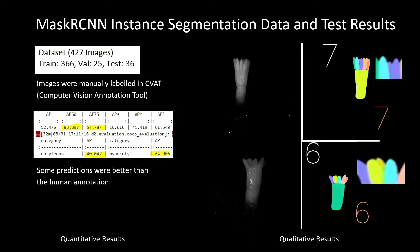For the Mask RCNN, we used a dataset of 427 images which were manually annotated in CVAT, and then we trained the instance segmentation model. The quantitative results were not too bad — it struggled with the small cotyledons, but the qualitative results were really promising. The number shown is actual versus predicted: 7 and 7, 6 and 6, and it did well for most of the test images. Even some of the predictions were better than human annotations.